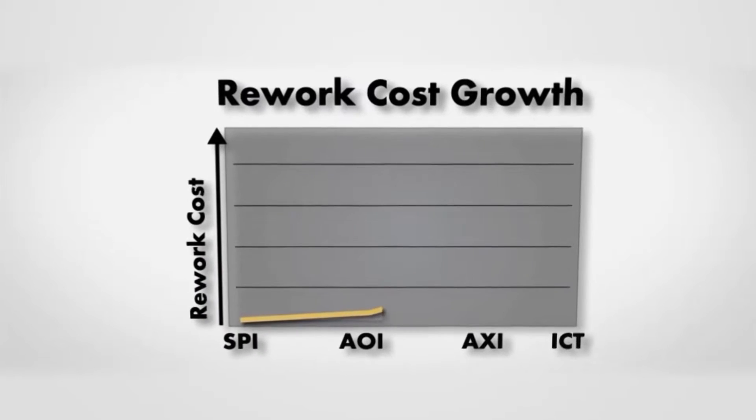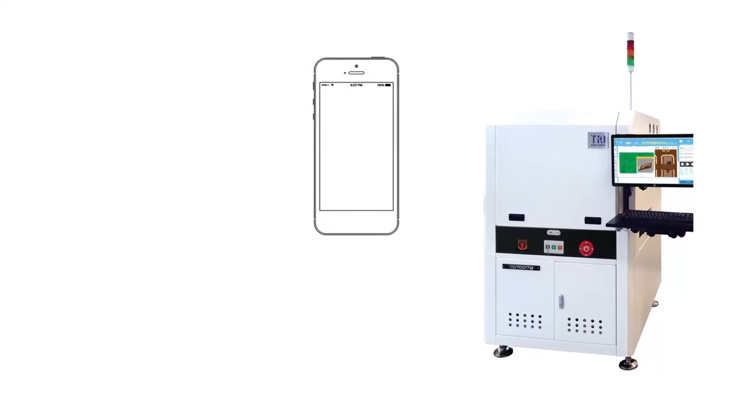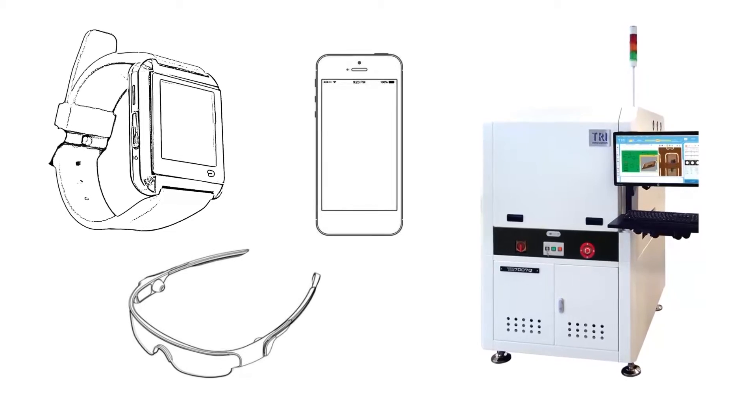SPI allows early detection of PCB solder paste defects, including miniature solder joints used in mobile and wearable electronics.